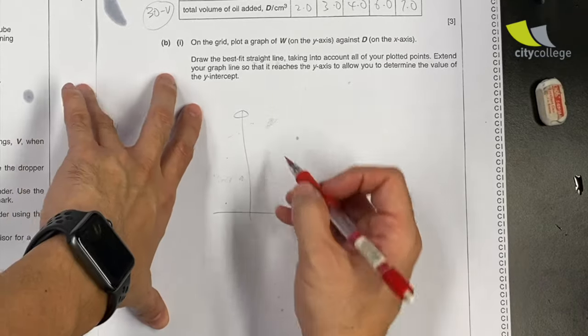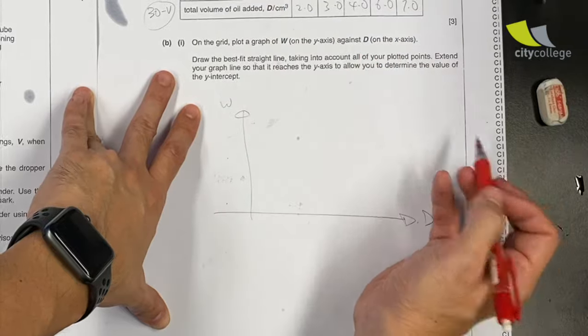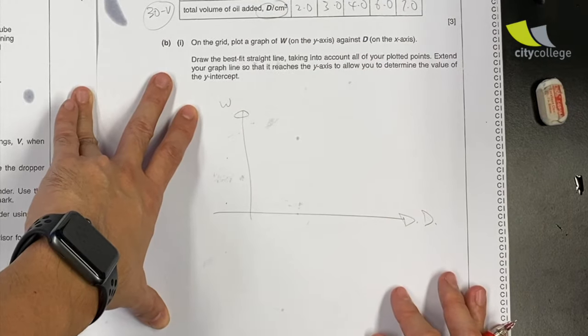Next I will get to plot the graph of W against D which is this set of values against this set of values. So see you in the next video.